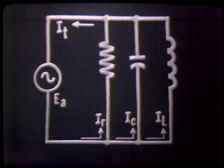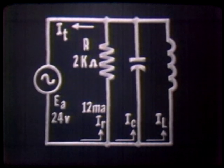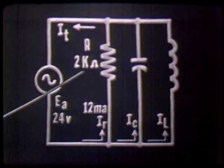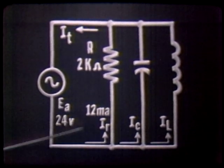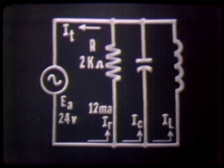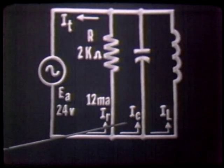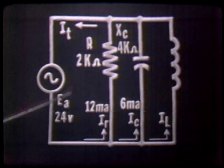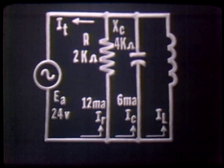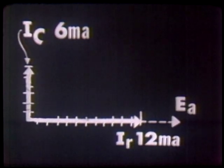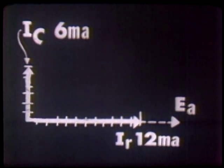Solving for branch currents by applying Ohm's law and plotting the current vectors: suppose we assume our resistor is 2K ohms with an applied voltage of 24 volts. Using Ohm's law, our current comes out to be 12 milliamperes. IR would be equal to 12 milliamperes at 0 degrees, in phase with EA. Next is IC, our capacitive current. Assuming a capacitive reactance of 4K ohms with 24 volts applied, we have a capacitive current of 6 milliamperes. IC leads IR by 90 degrees.